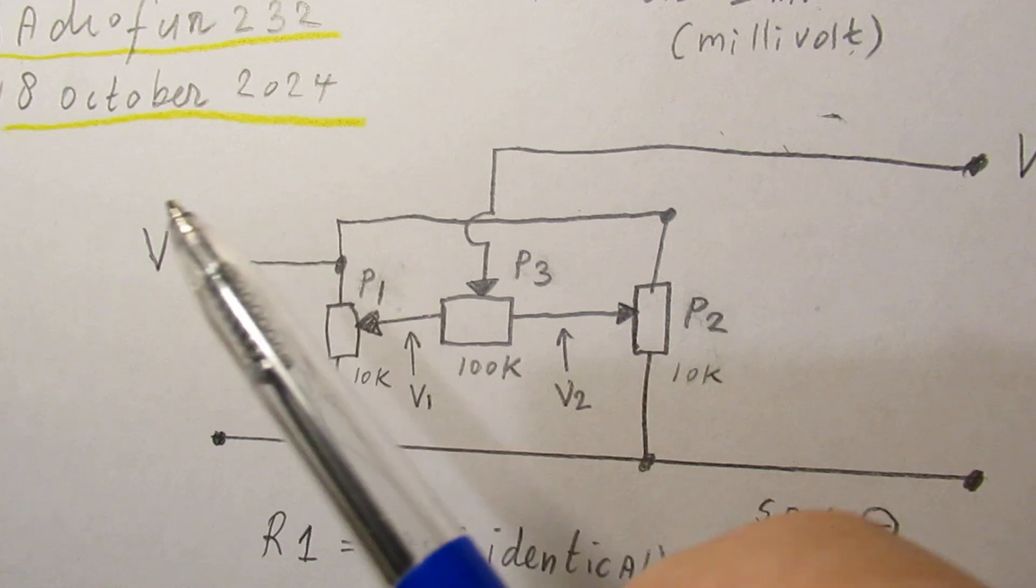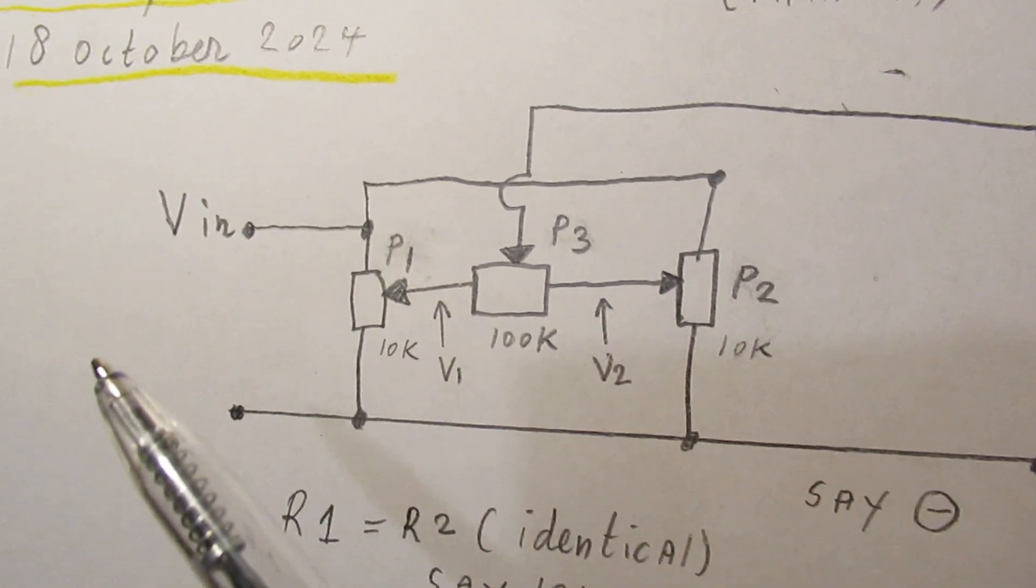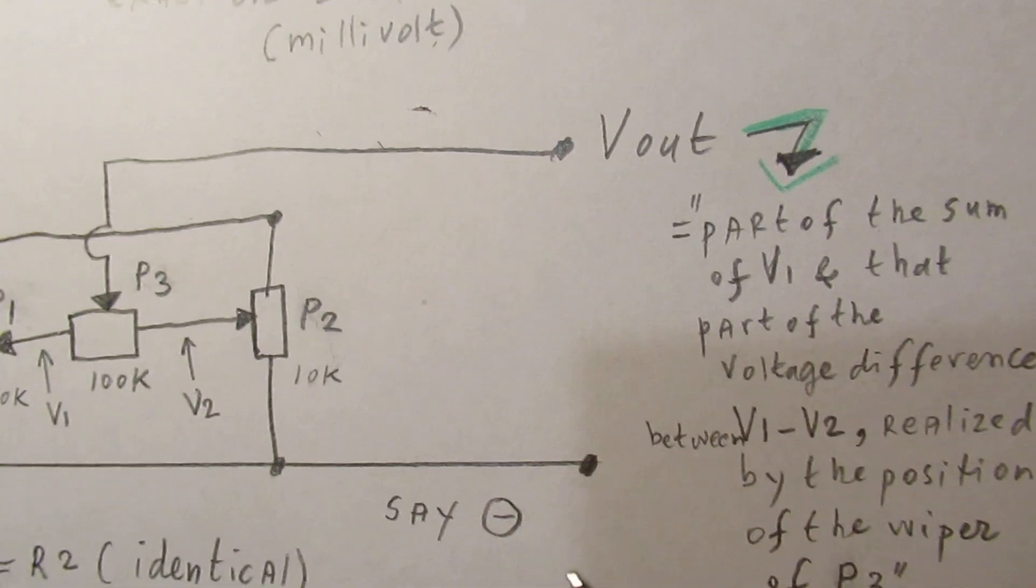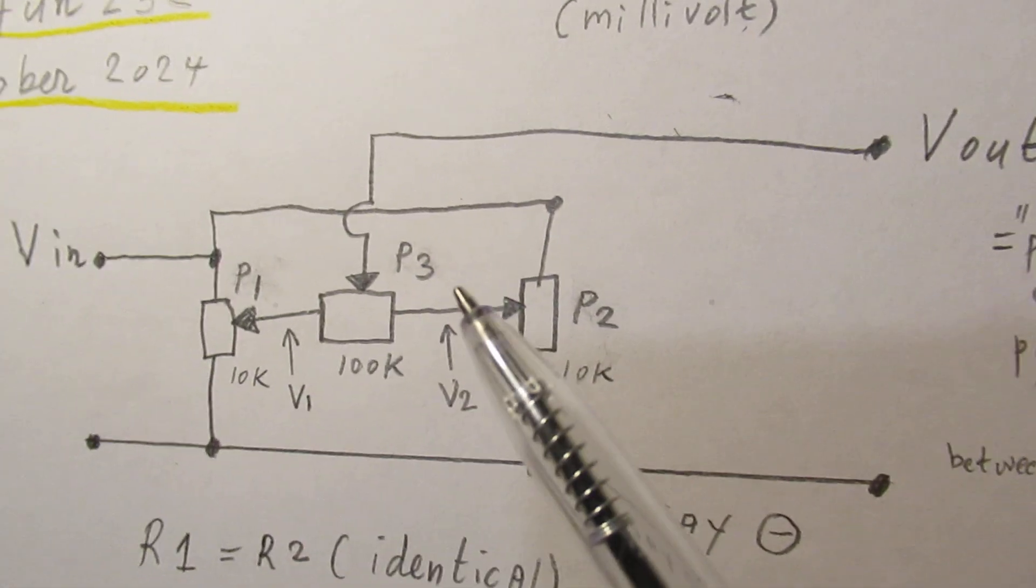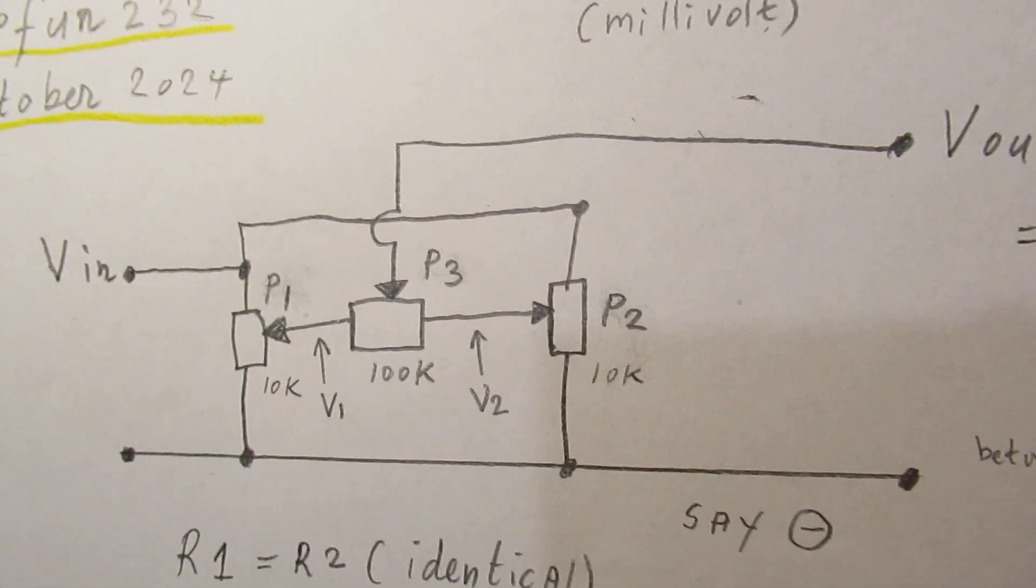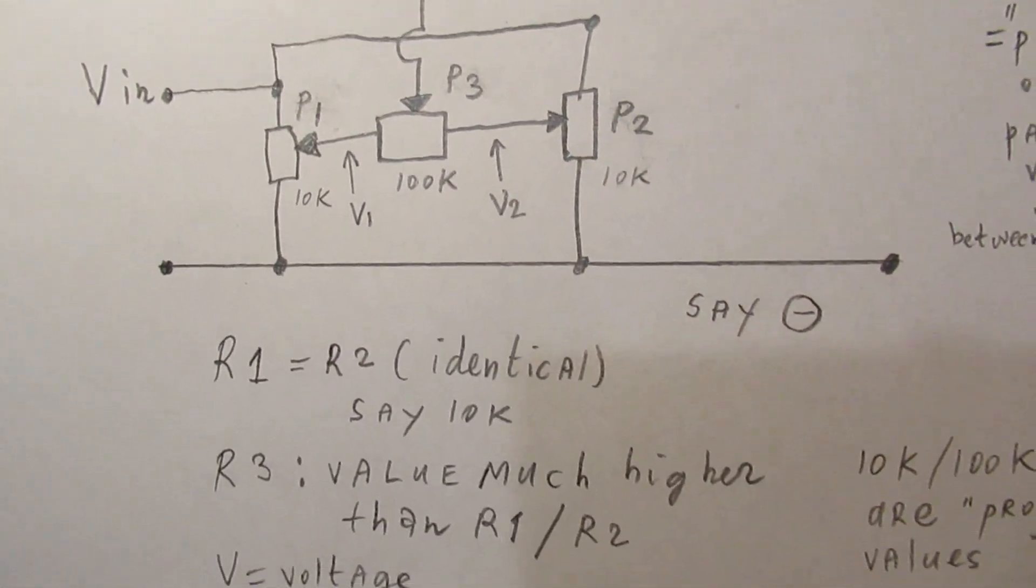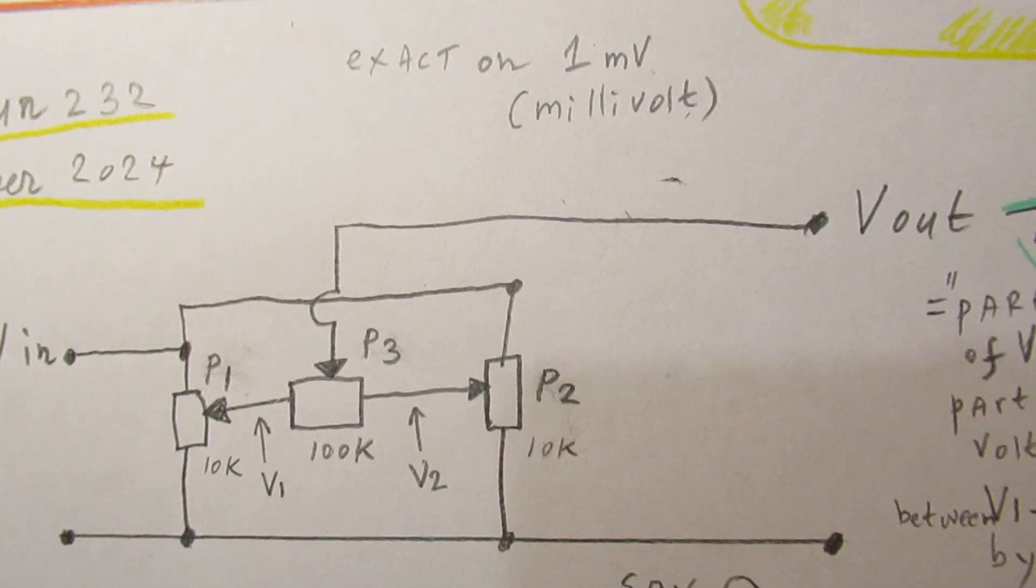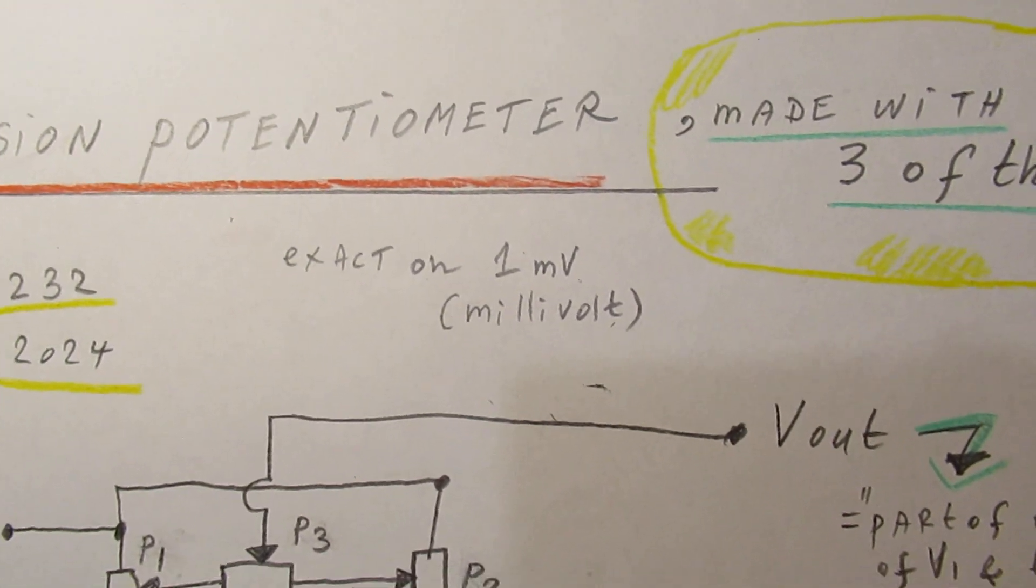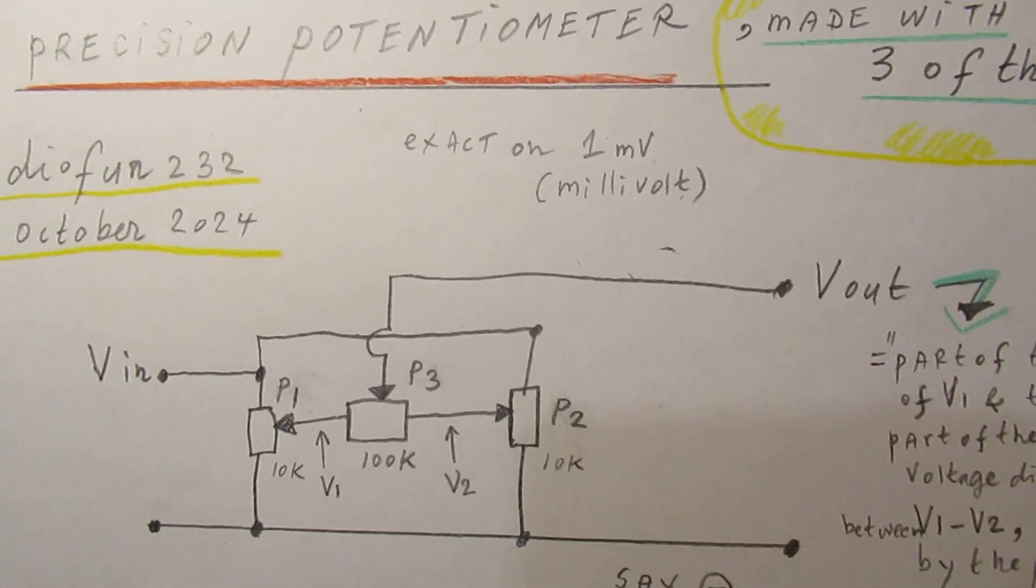Connect here a voltage source, measure here the output voltage, and look how precise you can set the output voltage. It must be in the order of one millivolt, that is one thousandth of a volt.